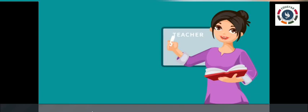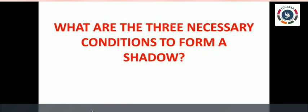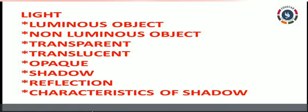You have already written some definitions in your classwork. Continue on the same page — leave a line and write the subheading with a black pen. Write shadow and define shadow; write the subheading reflection and write about reflection. Use blue ink pen to write in the classwork note, and use black pen for headings. For homework, write the answer to this question: What are the three necessary conditions to form a shadow?